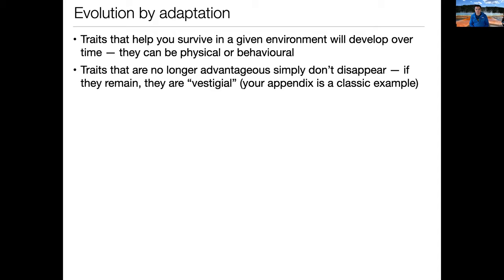Traits that are no longer advantageous don't simply disappear. If your species developed some trait that helps it survive through its current environment, but then over time the situation changes — maybe the environment changes, maybe you emerge from an ice age — then the features you developed for survival often persist. If they do persist, they often become what are called vestigial. They're there just because at some point in your species' history you had to have them, but today there's no reason to keep them or get rid of them, so they just continue to propagate through your genetics.